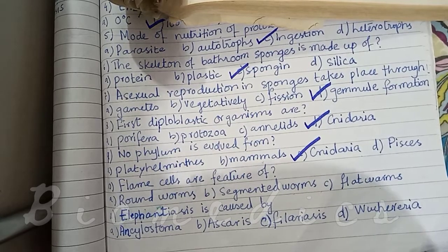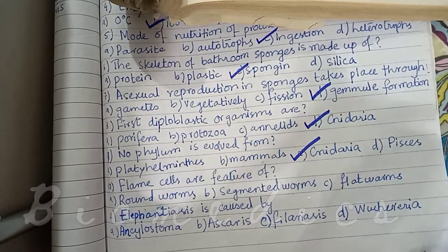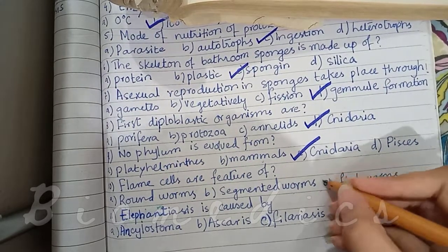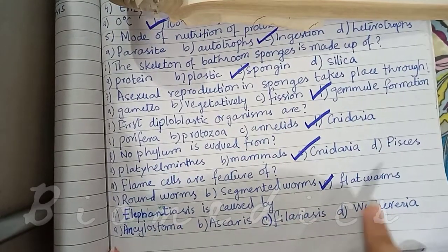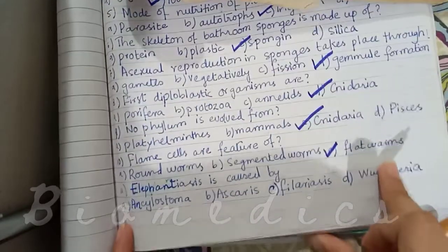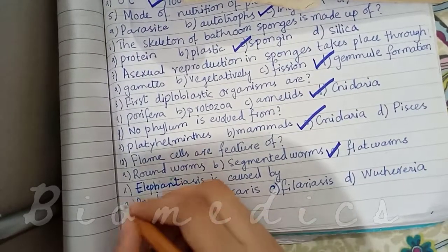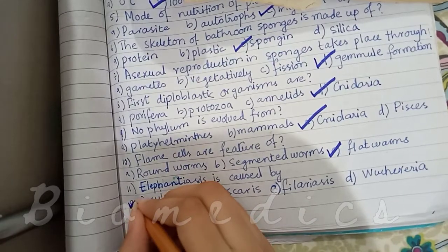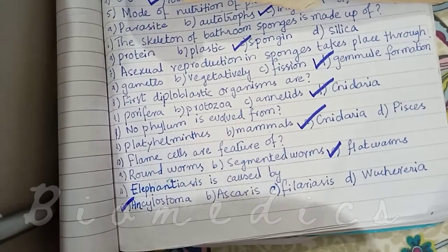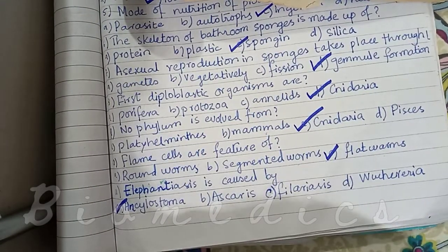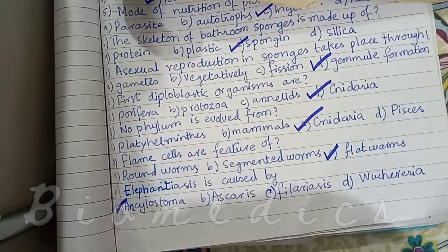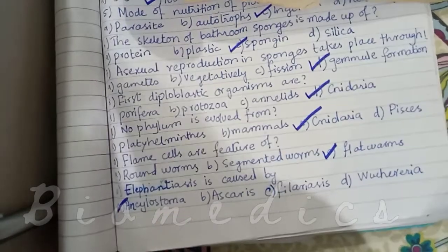The next question: Elephantiasis is caused by — the male genital organs have a lot of swelling because the lymphatic region is obstructed by the parasitic worm, which causes elephantiasis.